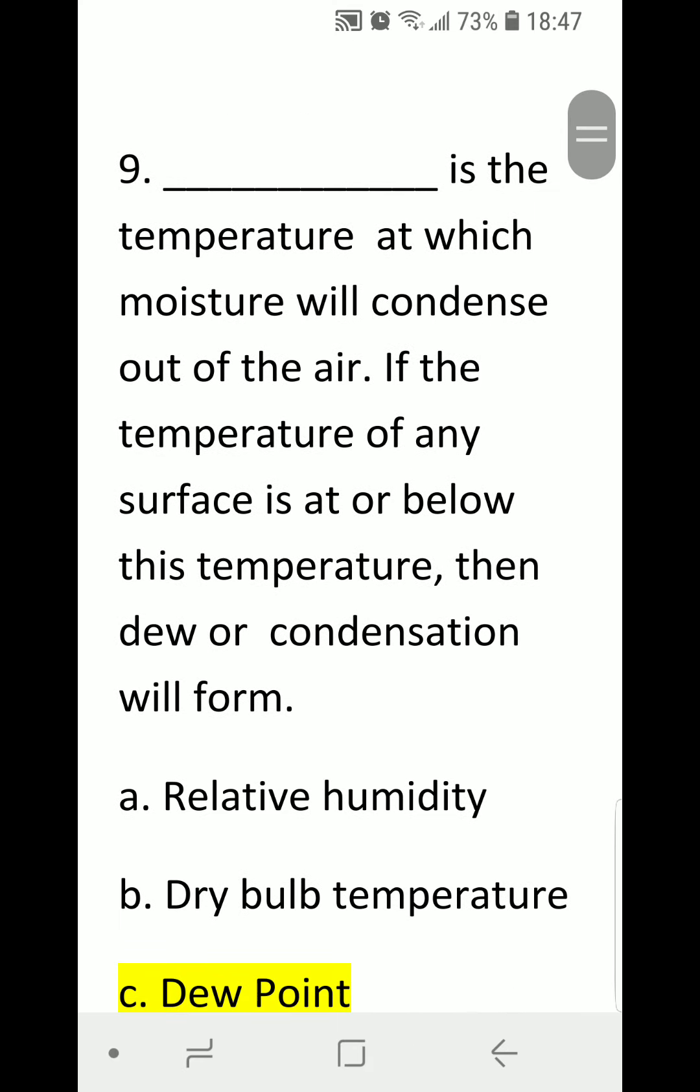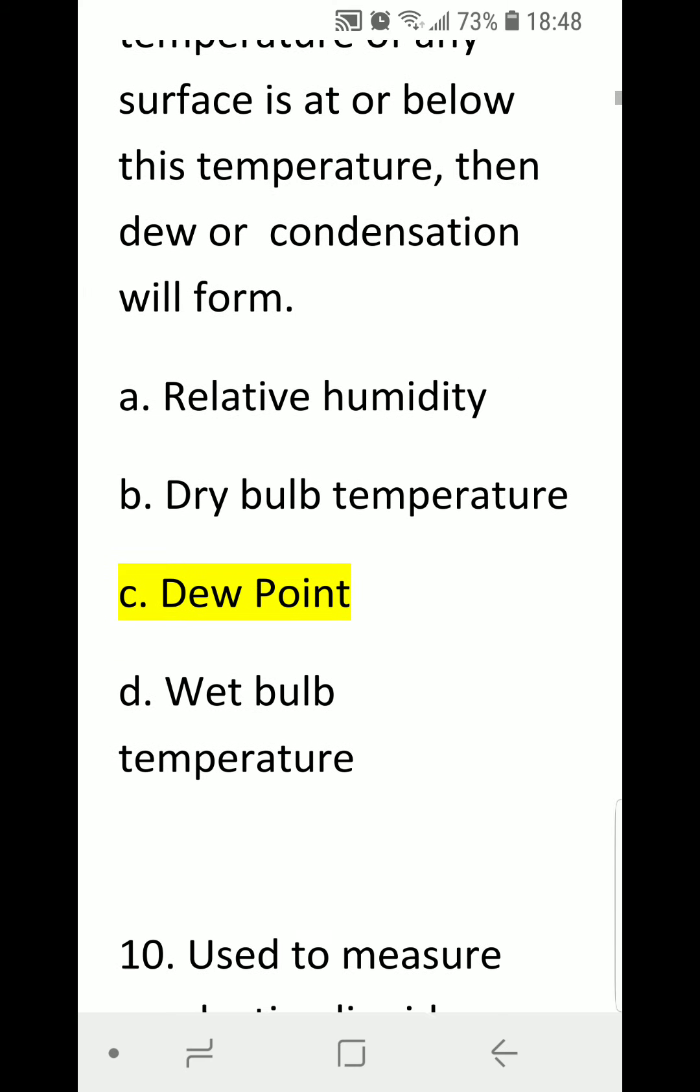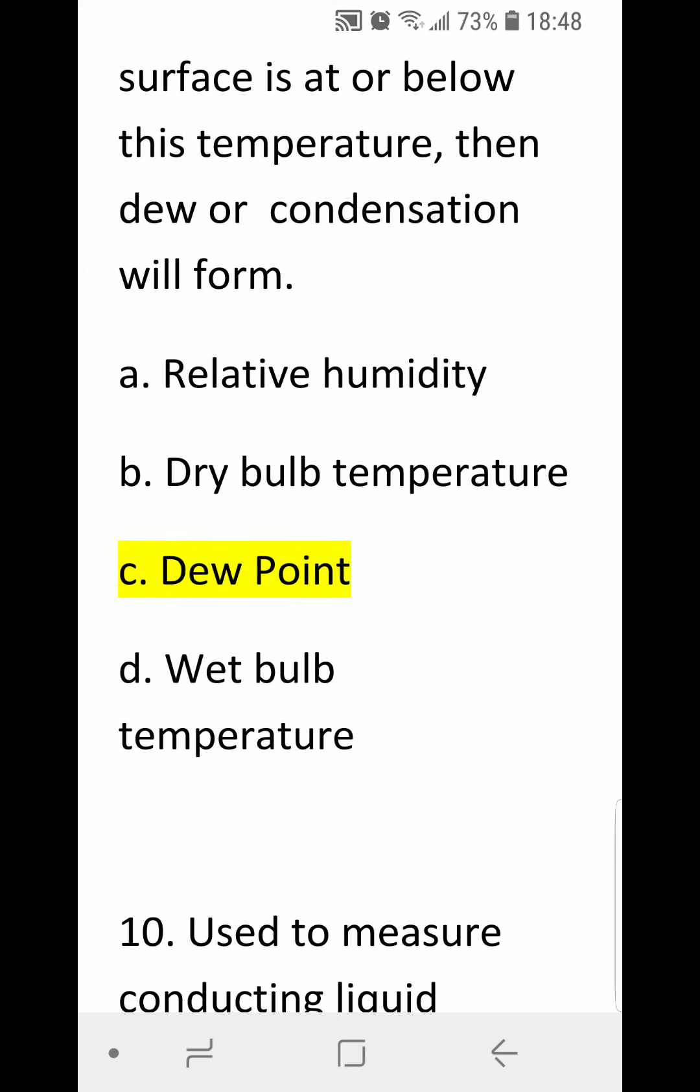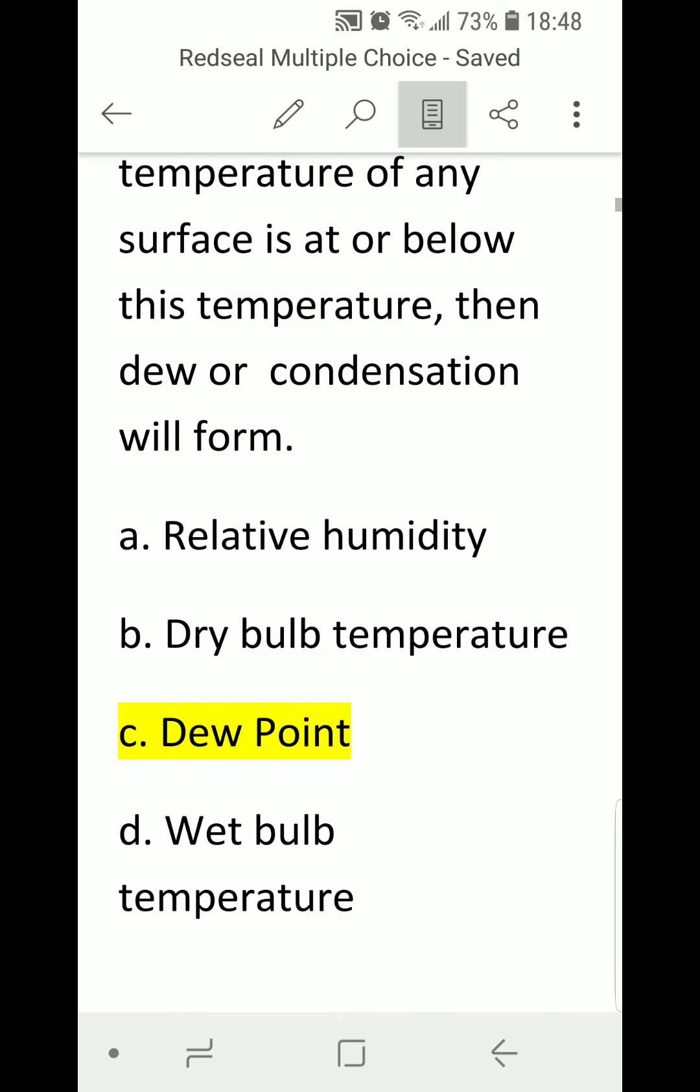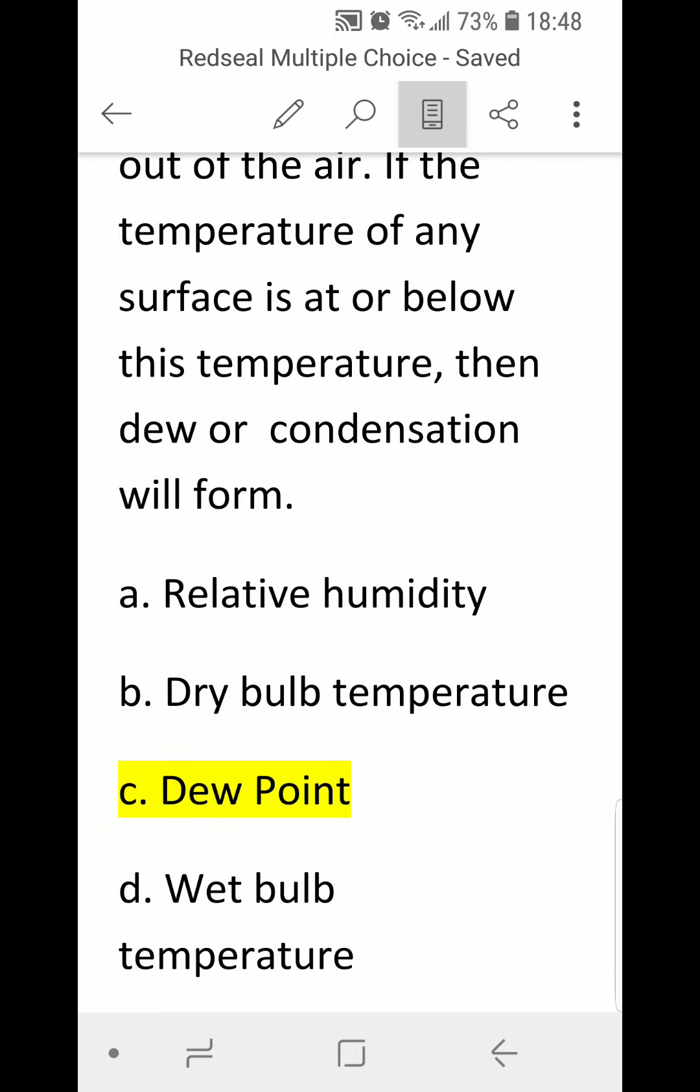Number nine: Blank is the temperature at which moisture will condense out of the air. If the temperature of any surface is at or below this temperature, then dew or condensation will form. A. relative humidity, B. dry bulb temperature, C. dew point, or D. wet bulb temperature. The correct answer is C. dew point.